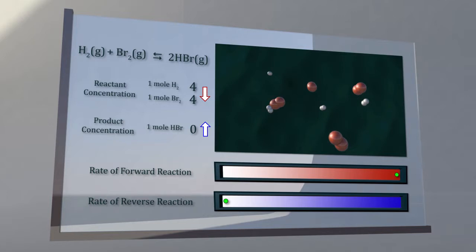As the concentration of reactants decreases, the rate of the forward reaction decreases. As the concentration of products increases, the rate of the reverse reaction increases.